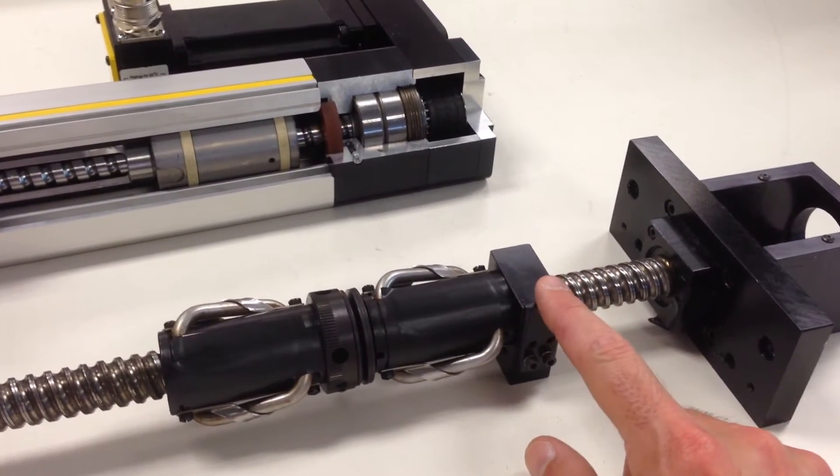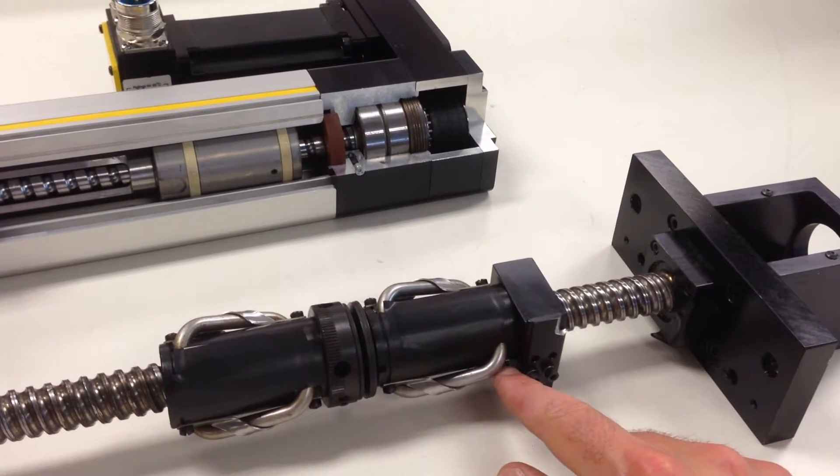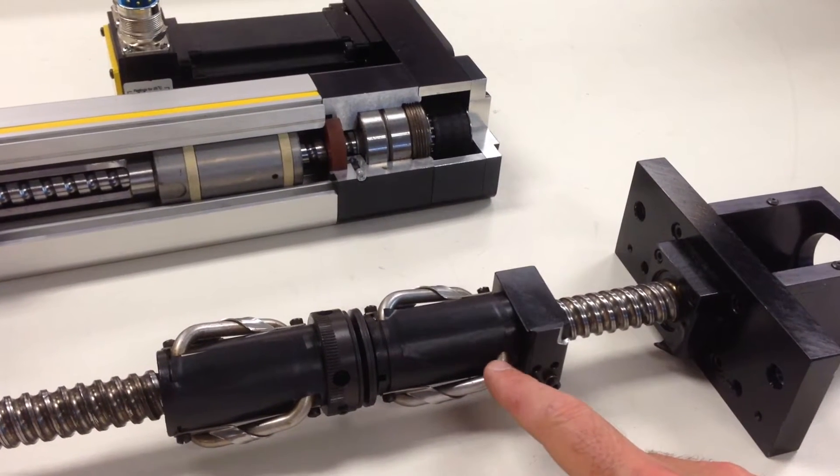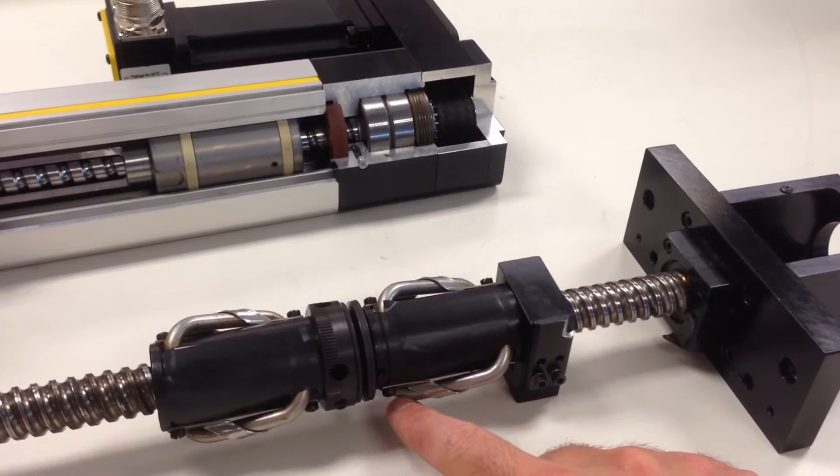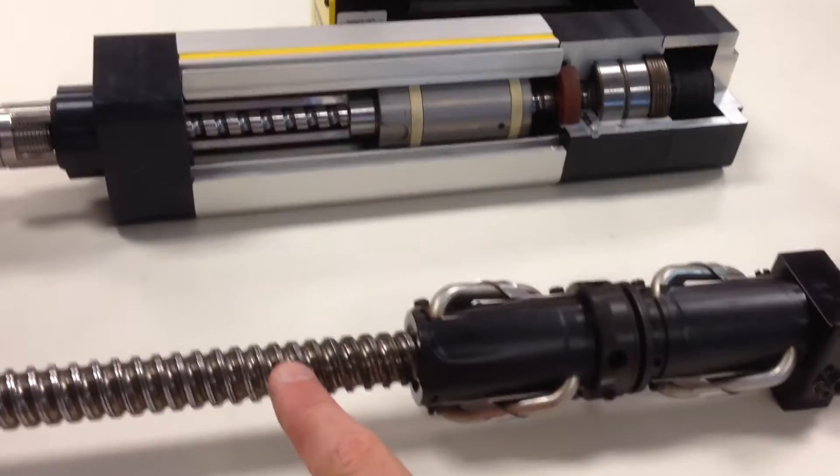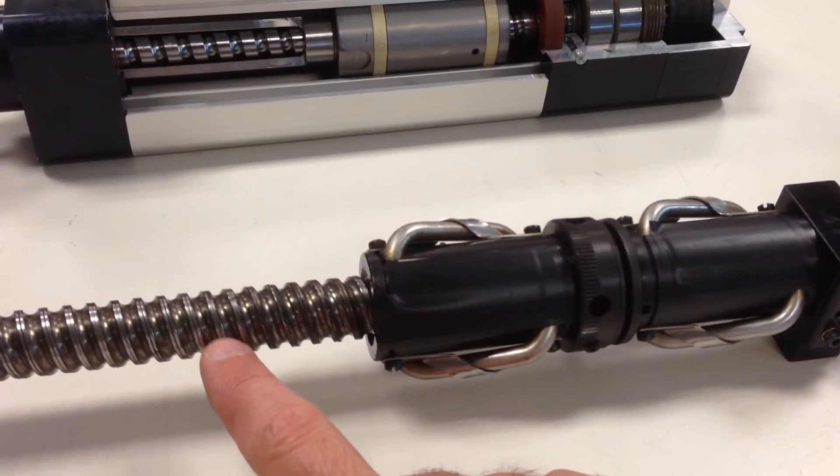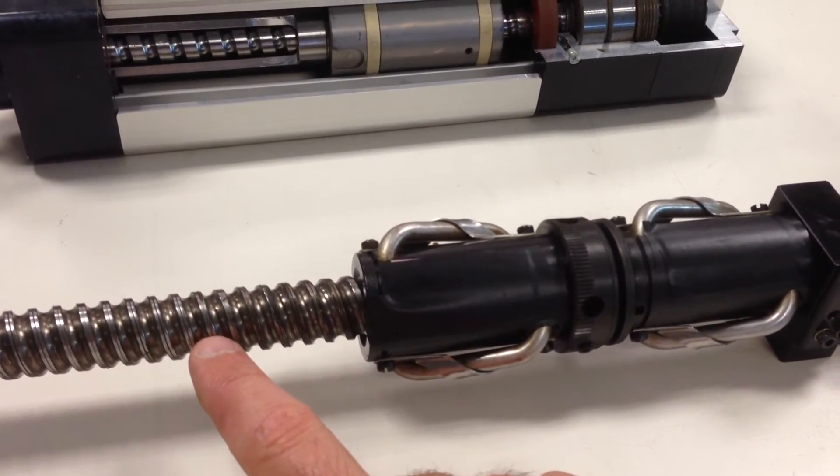This is a ball nut here, and you can see the external tubes that the ball bearings will recirculate through, come back, and engage the ball screw. On the ball screw you can see there are actually raceways, which is where the ball bearings go along.